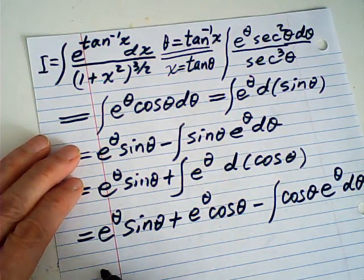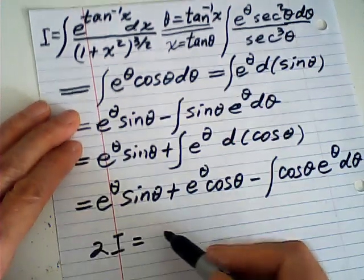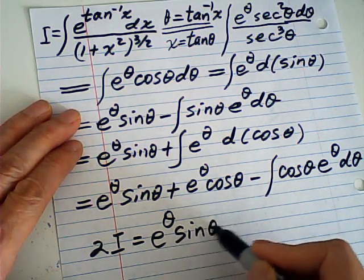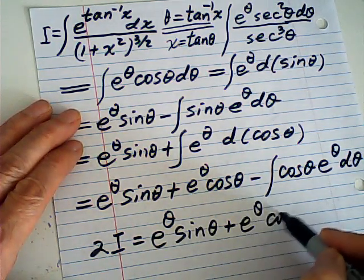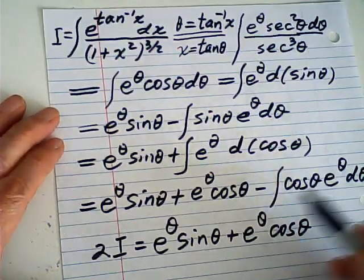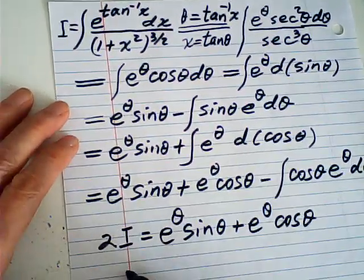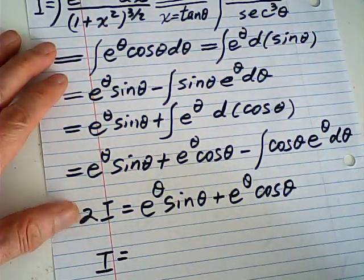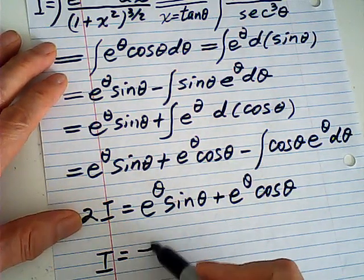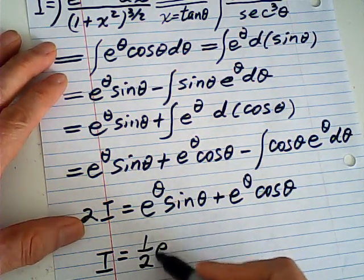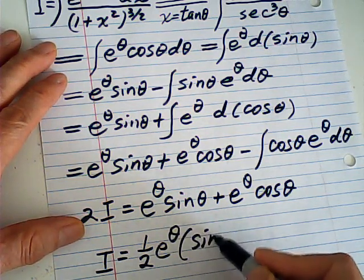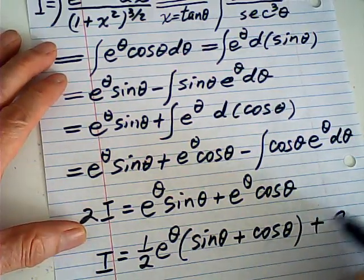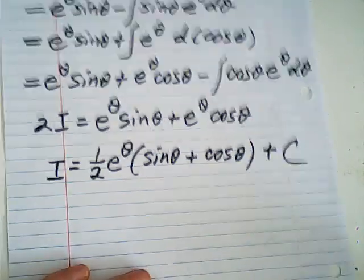Therefore if this integral is I, then 2I is equal to e to the theta times cosine theta d theta. So 2I gives us that expression, and therefore I equals one half times sine theta plus cosine theta plus C.